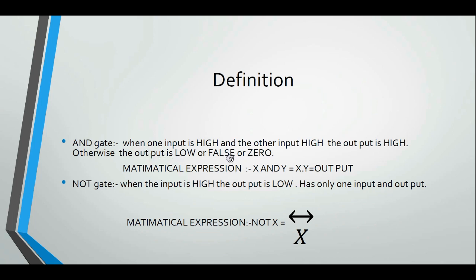When one input is high and the other input is high, the output is high; otherwise the output is low, or false, or zero. When both inputs are high, the output will be high. The mathematical expression of the AND gate is X dot Y — that is, X AND Y gives the output X·Y.